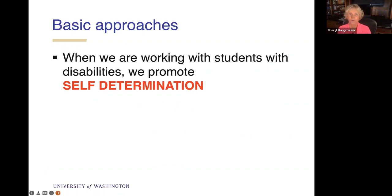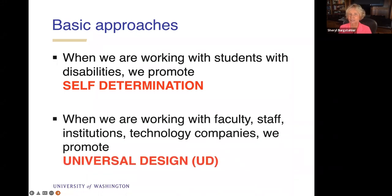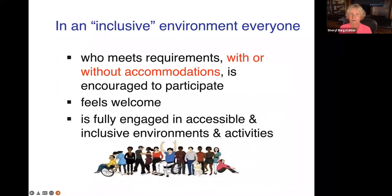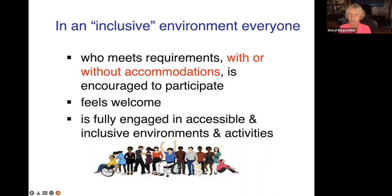We have two basic approaches in all that we do. When we're working with students with disabilities, we're promoting self-determination — a broad term meaning that students with disabilities will have access to the technology, the skill set, the mentoring, the networking, and all of the tools that they need to be successful. And then when we're working with faculty, staff, institutions, and technology companies, the broad approach is universal design, which is the framework I'll be talking about. An inclusive environment means that everyone who meets the requirements, with or without accommodations, is encouraged to participate so that everyone feels welcome and is fully engaged in accessible and inclusive activities.